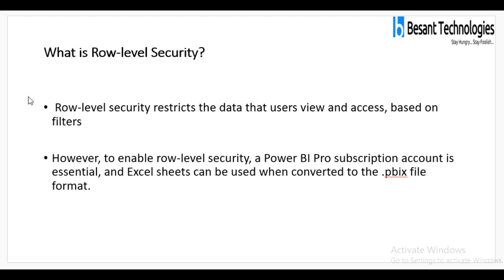What is row level security? Row level security restricts the data that users view and access based on filters. To enable row level security, a Power BI Pro subscription account is essential, and Excel sheets can be used when converted to the .pbix file format. For example, if you are creating region-wise visualizations, a Tamil Nadu regional manager should only see Tamil Nadu data, and an Andhra manager should only see Andhra-related data. You can select who sees what and create security levels so others cannot see other contents of your visualizations.